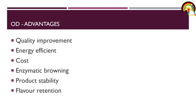Advantages of osmotic dehydration include: good quality improvement; energy efficiency compared to other dehydration techniques like air, vacuum, or tray drying since it can operate at low or high temperature; reduced packaging and distribution cost; reduced enzymatic browning; great product stability during storage because the water activity level is really low; and flavor retention when sugar or syrup is used as an osmotic agent.